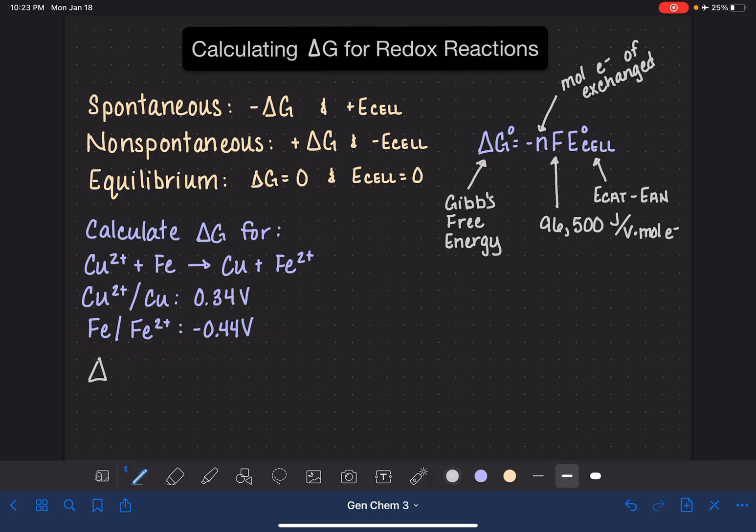Let's just go ahead and start by plugging in the parts of this equation that we already know. I'm going to begin just by copying negative NF E cell. And let's go ahead and start with the value of N. Remember that N is the number of moles of electrons that are exchanged in the reaction. One way that we can figure this out is by separating these into their two half reactions and figuring out how many electrons are involved. Sometimes we don't have to do that, though.